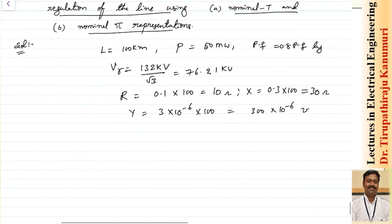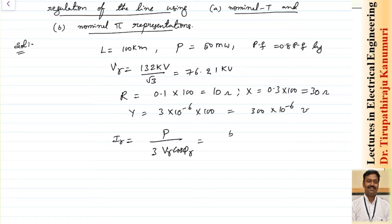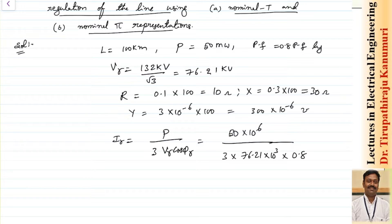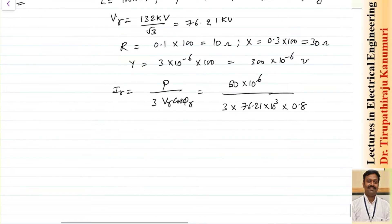Now calculating the receiving end current Ir. Using Ir = P / (3 × Vr × cos φ), substituting P = 50×10⁶, Vr = 76.21×10³, and cos φ = 0.8, we get Ir = 273.36 amperes.